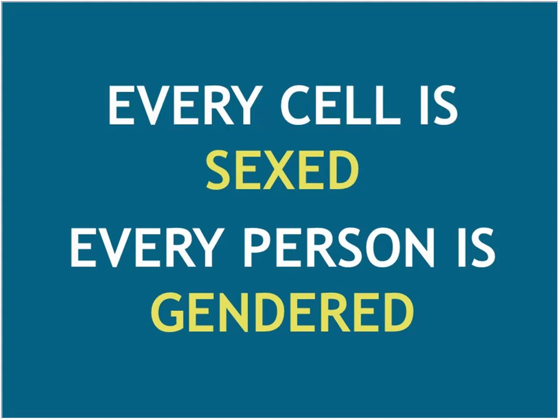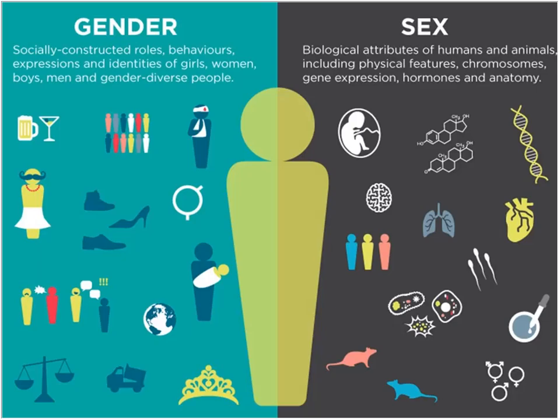We like to say: every cell is sexed and every person is gendered. Gender is the socially constructed roles, behaviors, expressions, and identities of girls, women, boys, men, and gender-diverse people. Sex is the biological attributes of humans and animals, including physical features, chromosomes, gene expression, hormones, and anatomy. If you're a basic scientist studying mice and rats, I want to hear about their sex. If you're dealing with humans, I want to hear about both their sex and their gender.